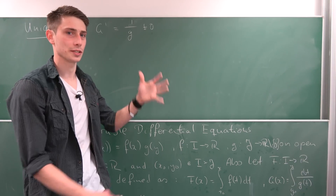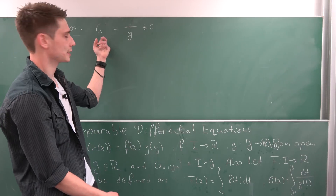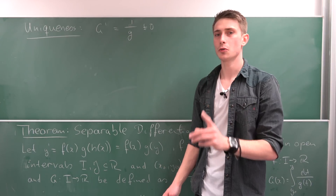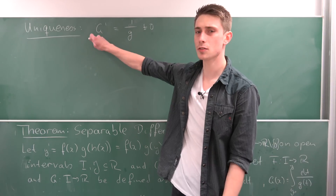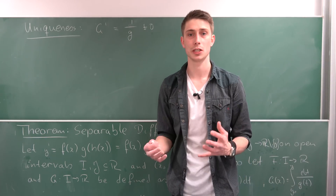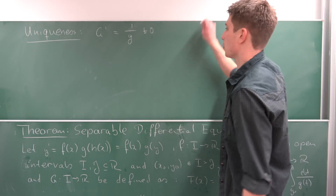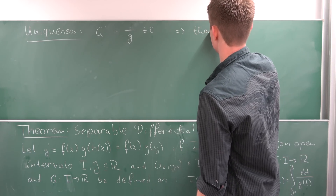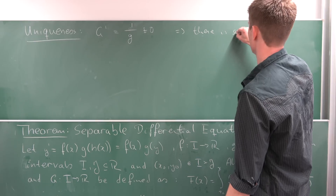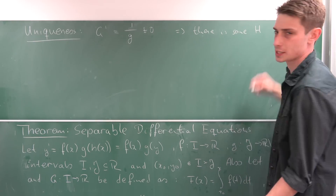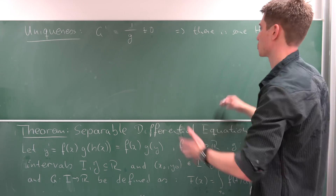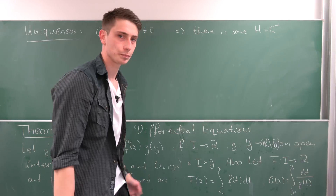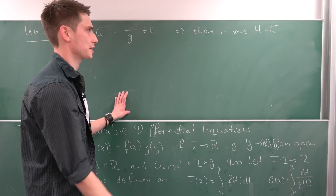And here is where the inverse function theorem comes into play. It tells us that if capital G is strictly increasing or decreasing and continuously differentiable, then there exists a new inverse function to G which is also continuously differentiable. So we now know by the inverse function theorem that there is some function H, for example, going from some interval to R, which is just the inverse of G.